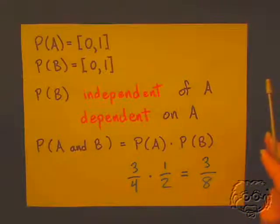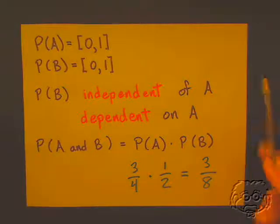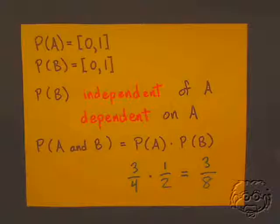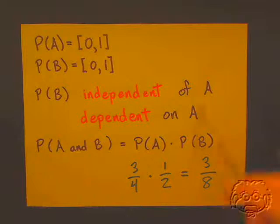The second case is when the probability of event B occurring is dependent on event A. You'll see what I mean for these two cases when I show you the examples. First of all, the most straightforward case,